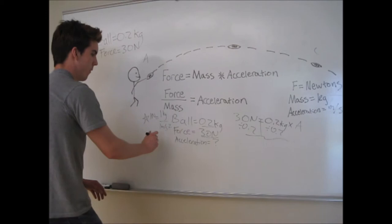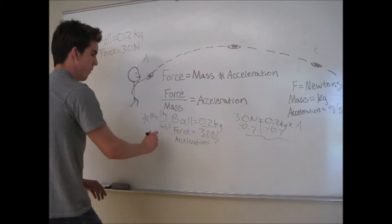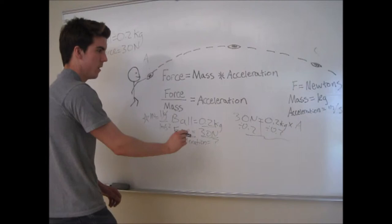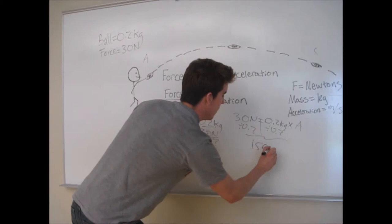And then understand that Newton is 1 kilogram over 1 meters per second, and you're dividing by kilograms. So kilograms cancel, and you'll get your answer in meters per second. So you will get 150 meters per second squared to be your answer for acceleration.